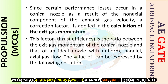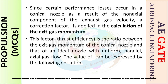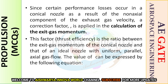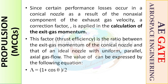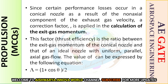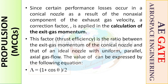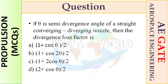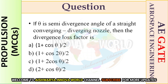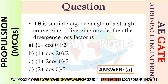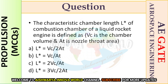This factor, also called thrust efficiency, is the ratio between the exit gas momentum of a conical nozzle and that of an ideal nozzle with uniform, parallel, and axial flow gas. This can be expressed as lambda equals (1 + cos theta) / 2. So our right option is option A.